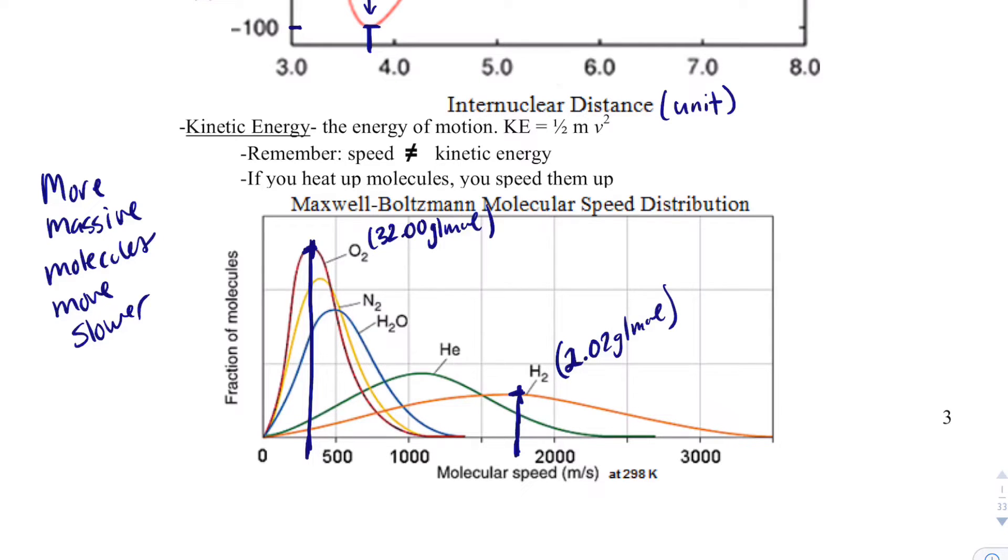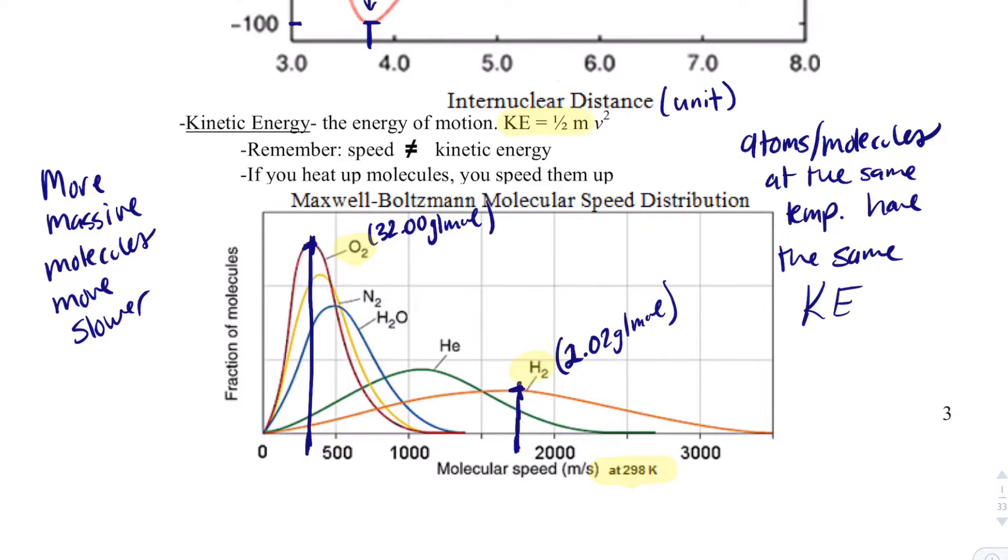What is important is that atoms or molecules at the same temperature have the same kinetic energy. Both oxygen and hydrogen are at 298 Kelvin, and because kinetic energy equals one-half mass times velocity squared.